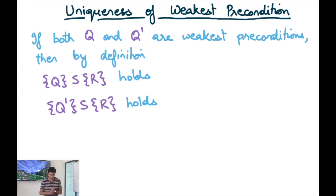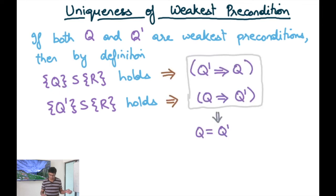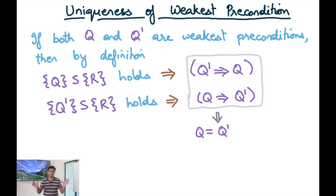An interesting property of weakest preconditions is that they are unique. If both q and q' are weakest preconditions of statement s and predicate r, then {q}s{r} holds and {q'}s{r} holds. Because q' is the weakest precondition, if {q}s{r} holds then q implies q'. Similarly, if {q'}s{r} holds and q is the weakest precondition, then q' implies q. From both implications, q must equal q'. There can be only one largest set — if there were two, one would be contained in the other, so one could not have been the weakest.